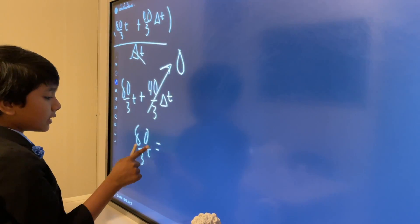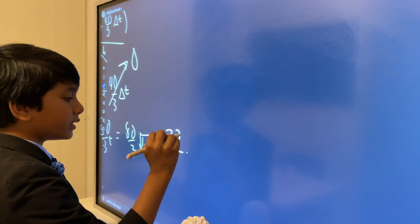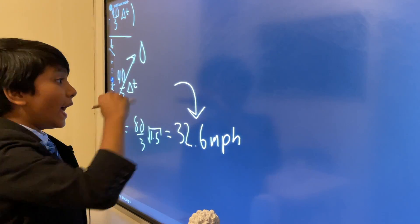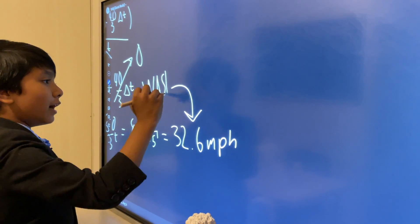So, 80 over 3 t is going to be 80 over 3 times the square root of 1.5, which is going to be 32.6 miles per hour. And that, folks, is way above the speed limit.